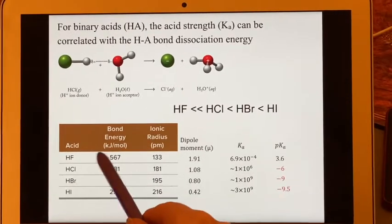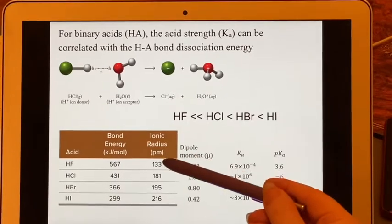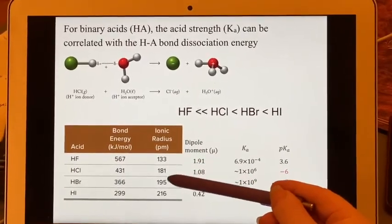On the other hand, if you start thinking about the sizes of these things, the radius of the ion created, whether it's the fluoride, the chloride, the bromide, or the iodide,